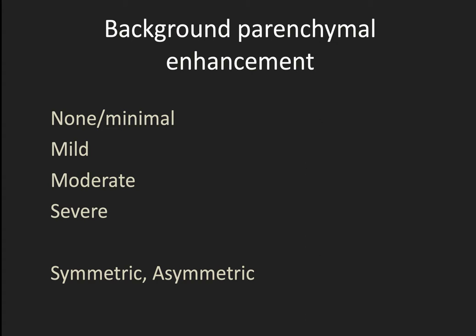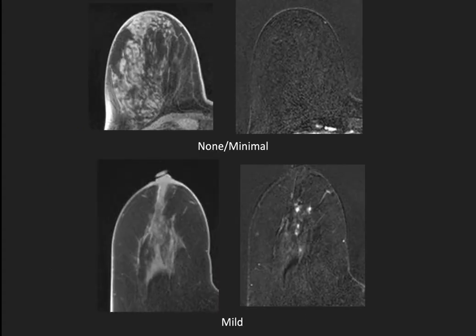These are all subjective: none, minimal, mild, moderate, and severe. This is all relative to the amount of fibroglandular tissue, not the whole breast, and it can be asymmetric or symmetric.